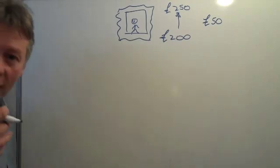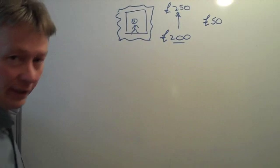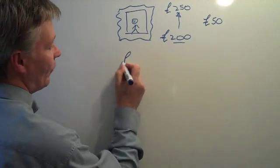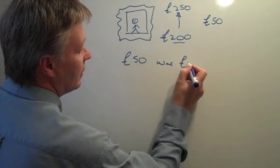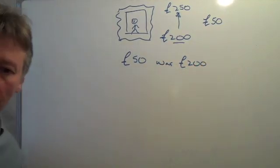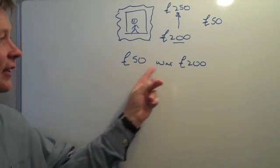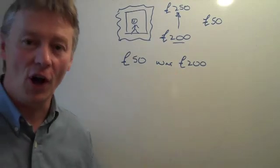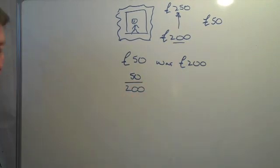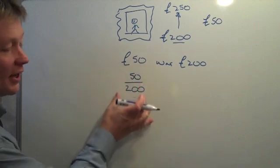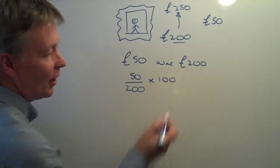In order to calculate the percentage change, I need to look at it as a change against the old value or the original value. The painting increased by £50 and it was originally £200. So the change is expressed as a fraction: 50 over 200. To calculate it as a percentage, I then need to multiply by 100.